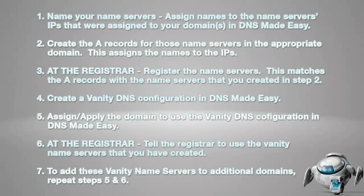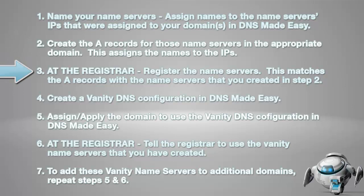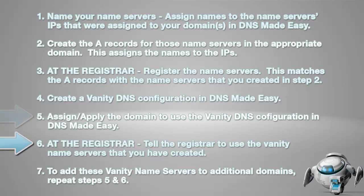To recap, let's go over the steps involved one last time. First, name your name servers — assign names to the name servers' IPs that were assigned to your domains in DNS Made Easy. Second, create the A records for those name servers in the appropriate domain; this assigns the names to the IPs. Third, at the registrar, register the name servers — this matches the A records with the name servers created in step 2. Fourth, create a vanity DNS configuration in DNS Made Easy. Fifth, assign the domain to use the vanity DNS configuration in DNS Made Easy. Sixth, at the registrar, tell the registrar to use the vanity name servers that you have created. To add these vanity name servers to additional domains, repeat steps 5 and 6.